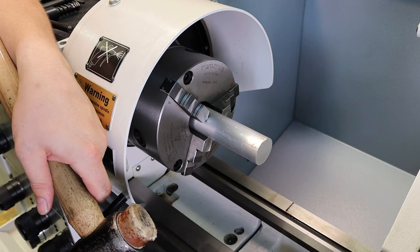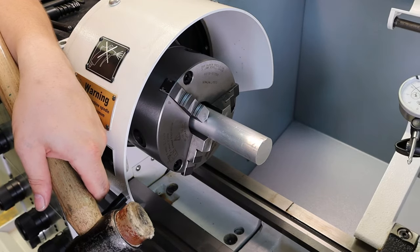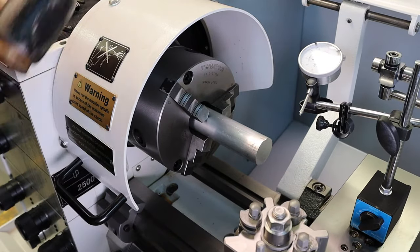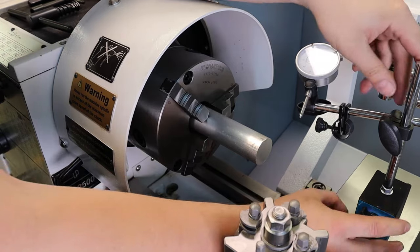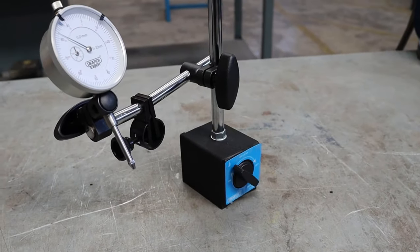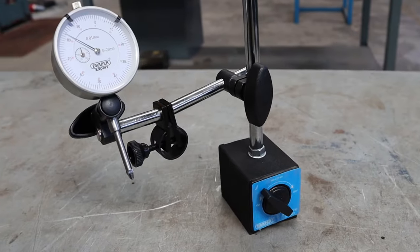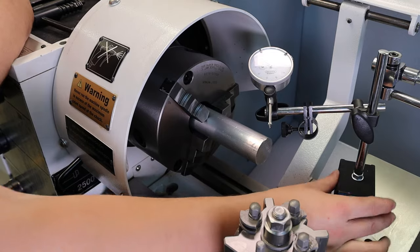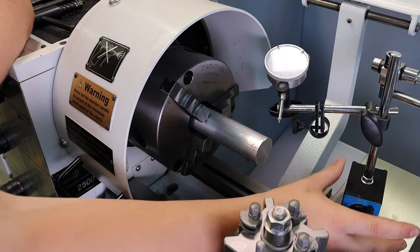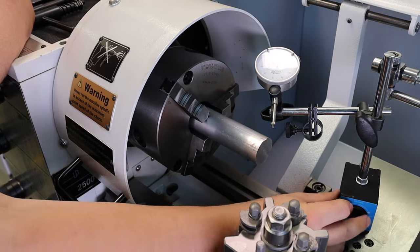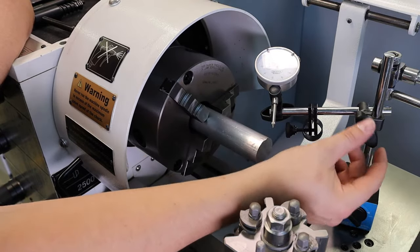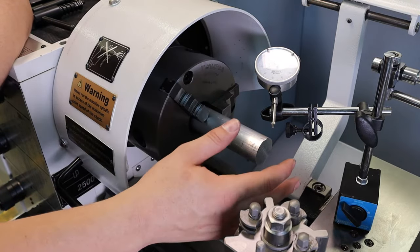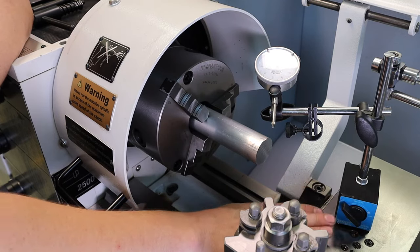So what we can use is a DTI. Now a DTI is a dial test indicator, and generally they come on a magnetic stand. So this is our DTI here. The stand's made up of a few simple components. There's a magnet on the bottom with a switch in most instances where you can turn on or off. There's a holding arrangement and you can adjust this holding arrangement to move the indicator wherever you may need it.